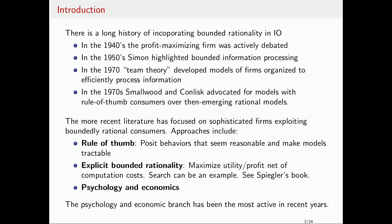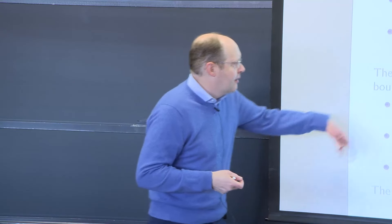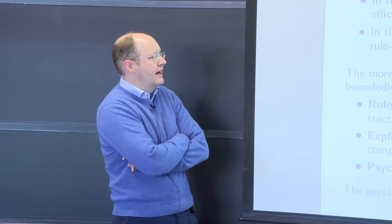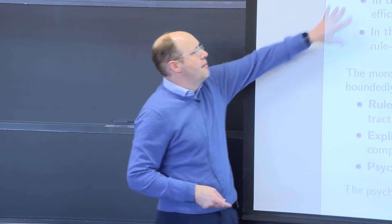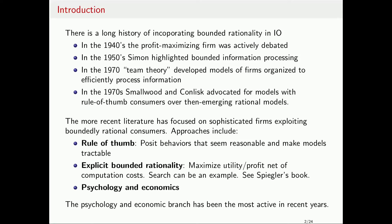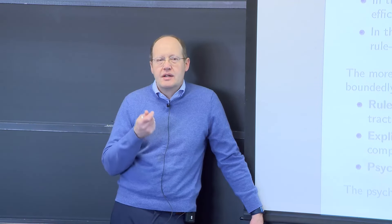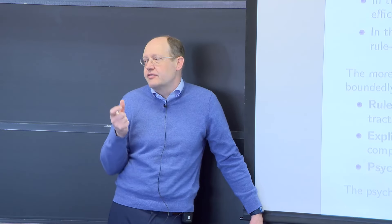Smallwood and Conlisk were very clear in arguing, when rational consumers were first coming in, that they felt rational consumers were much less plausible than irrational consumers — we shouldn't assume consumers are hyper-sophisticated rational people. More recent literature over the last decades has focused on abandoning irrational firms and gone with hyper-sophisticated firms that exploit boundedly rational customers. That's a big literature, and it's why we want agencies like the Consumer Financial Protection Bureau.